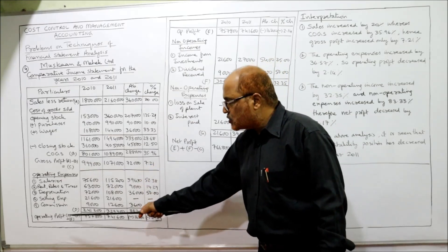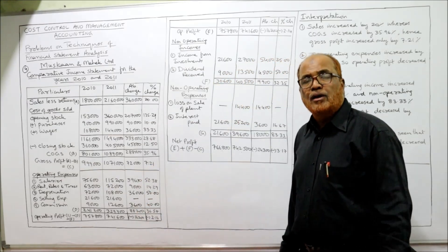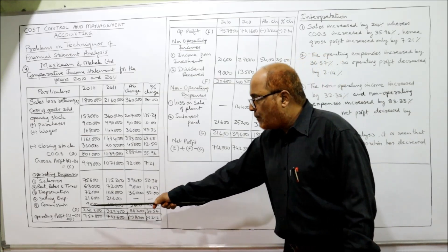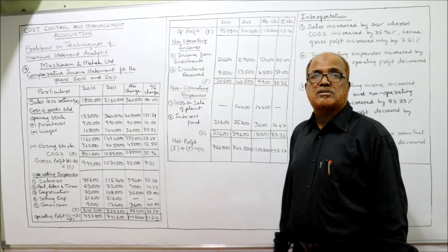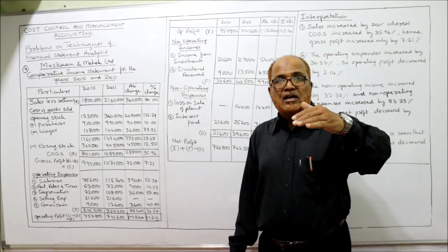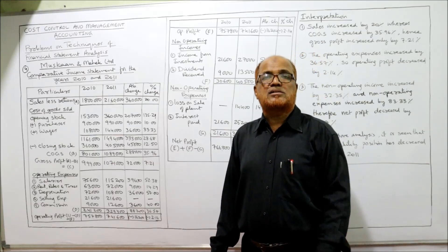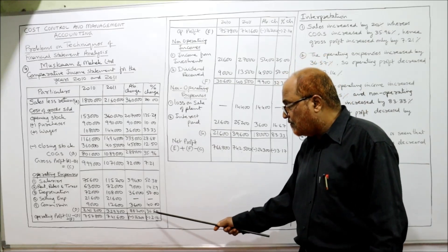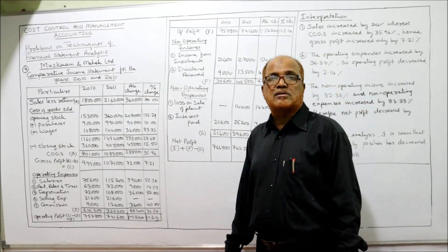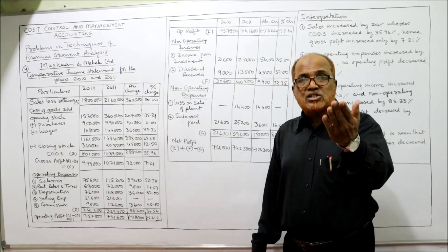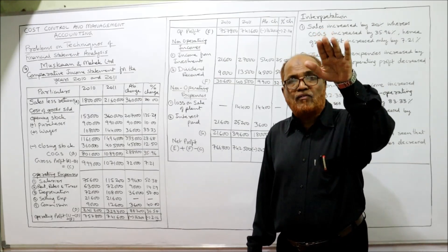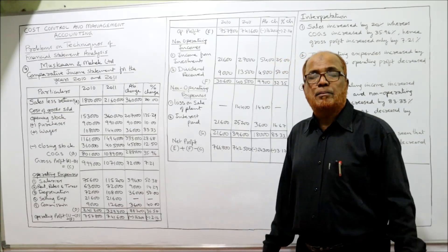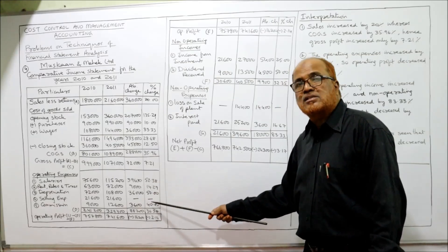Moving from gross profit to operating profit: gross profit increased by 7.21%, but operating profit has actually decreased by 2.14%. The reason is that operating expenses increased at a very high rate of 36.57%. As costs increase, profitability comes down — the operating profit decreased because operating expenses increased heavily.